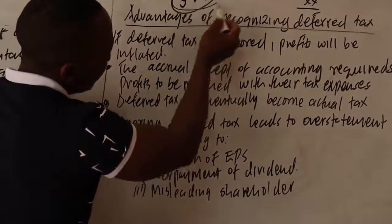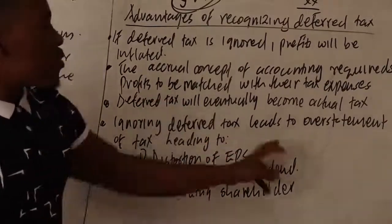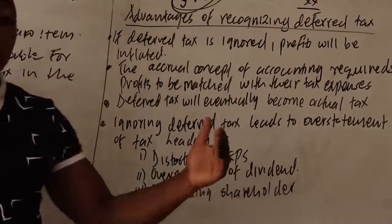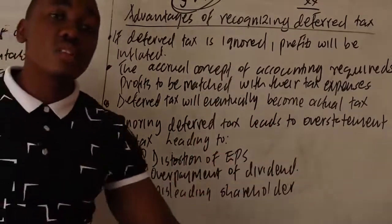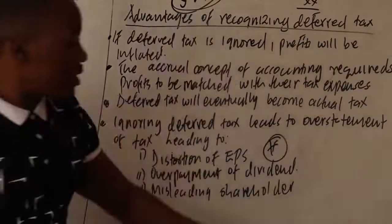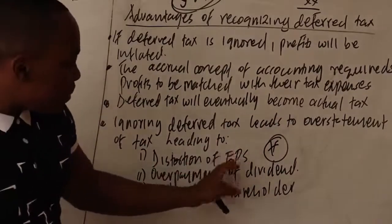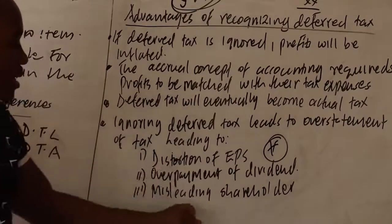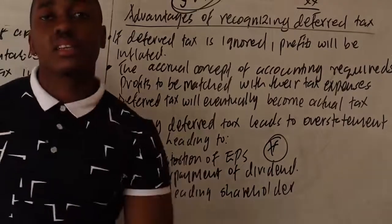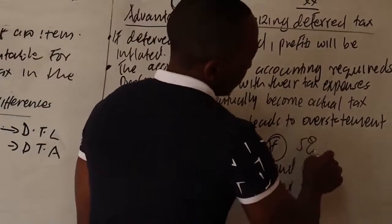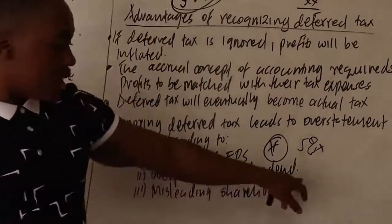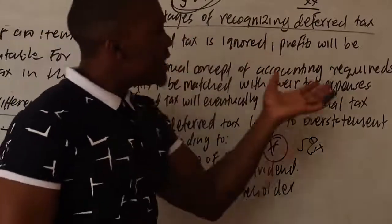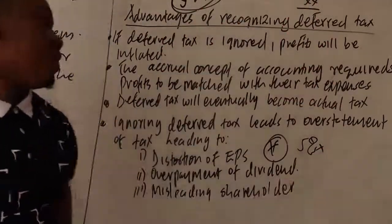Fourth, ignoring deferred tax leads to overstatement of profit, which causes distortion of EPS. Investors make decisions based on earnings per share, so if EPS is distorted it leads to misleading shareholders. Additionally, overstated profit leads to overpayment of dividends — distributing profits that only appear large because deferred tax was not provided for. These are the key reasons to recognize deferred tax.